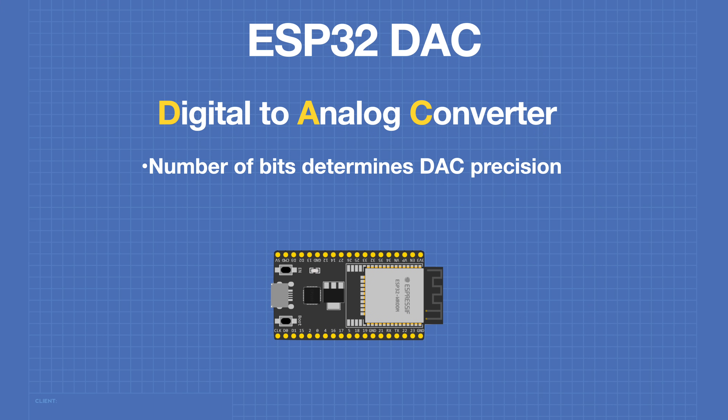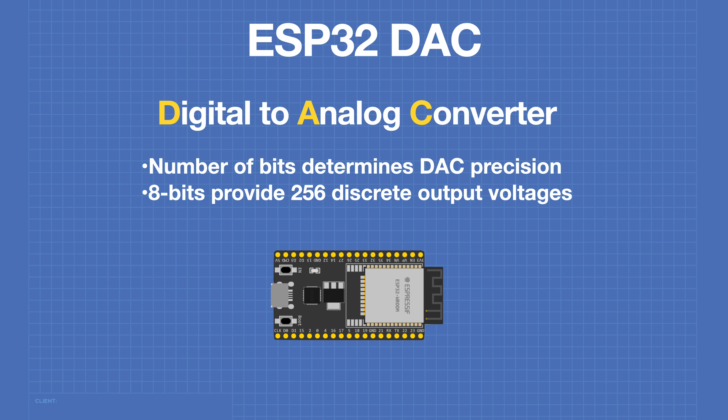There are many methods that can be used to convert a digital input to an analog output, including PWM. Two very common methods are weighted resistor DACs and R2R ladder DACs. Note that the switches in these DACs actually just represent the 1s or 0s of the digital input. The number of bits that a DAC has determines its precision or resolution — an 8-bit DAC provides 256 discrete output voltages.